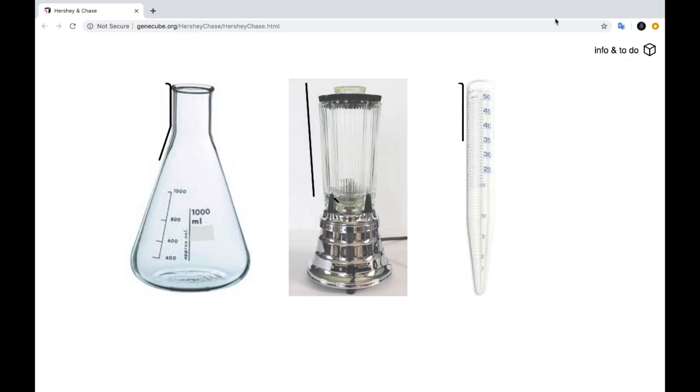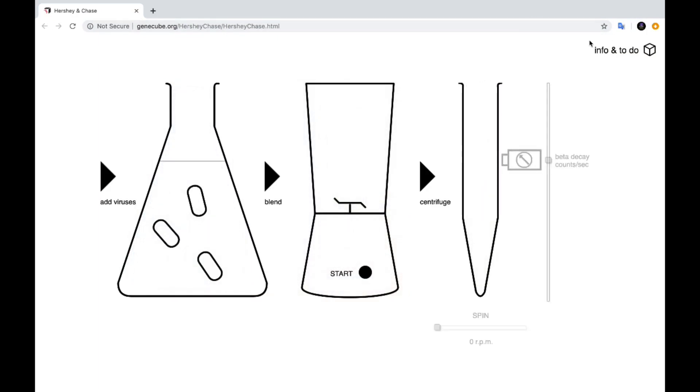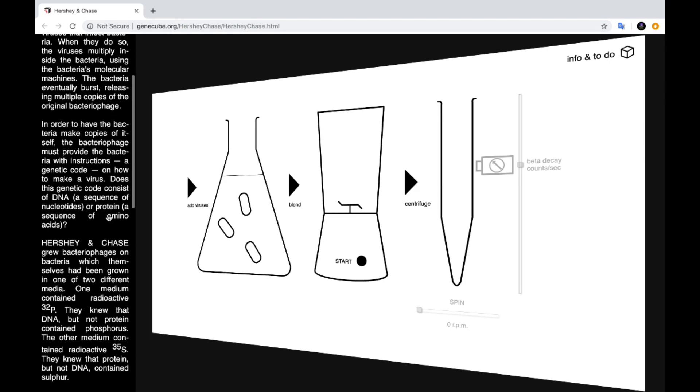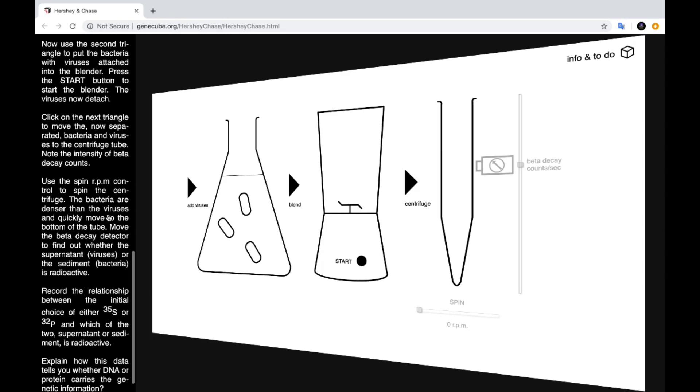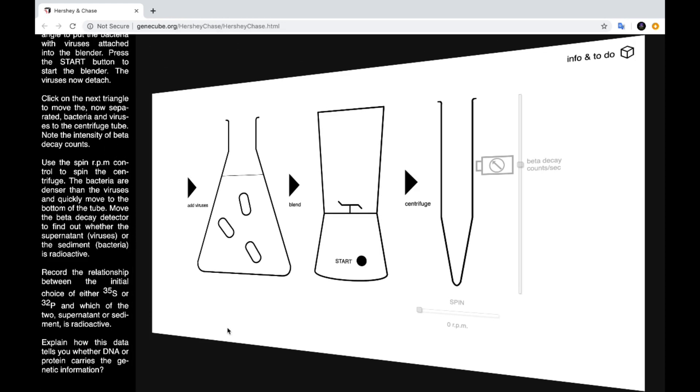Now if you'd like to follow along and model this process online there is a program that you can use known as GeneCube.org and you can go to that site and if you click here it shows you information about the experiment and what to do with this simulation.